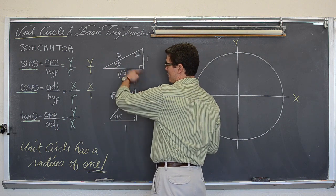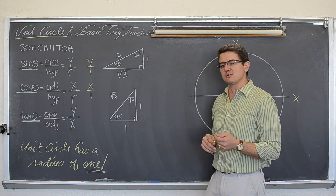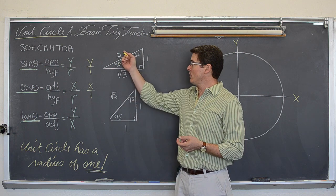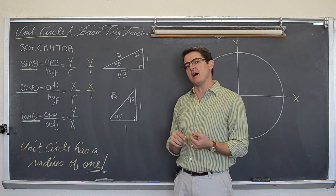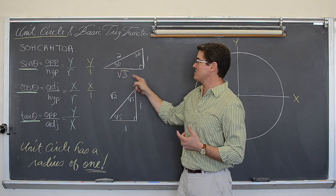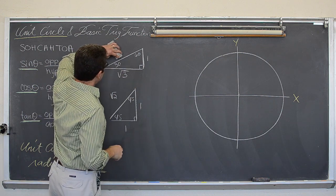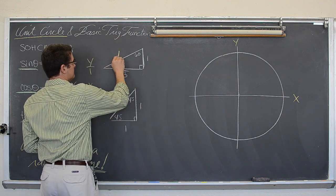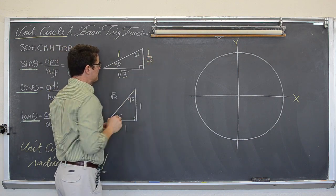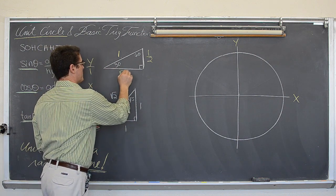Now I am going to be referring to these two specialty triangles from geometry. The hypotenuse of a right triangle will act as the radius of the circle, so we want these hypotenuse values to be one. I am going to divide all of these values by two. So if I divide the value of two by two I get one, and if I divide this length by two I get one half, and if I divide this length by two I get the square root of three over two.